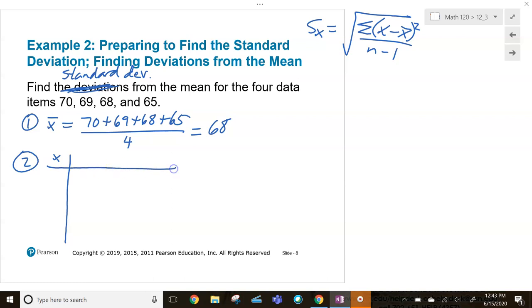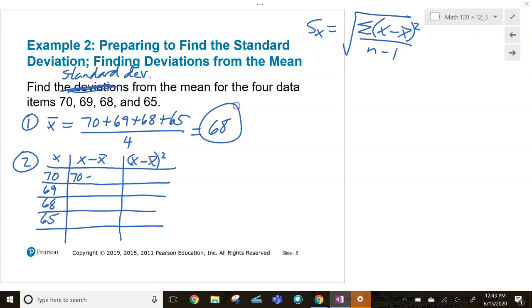Okay, let's go ahead and put in our data items. Then we'll find the difference between the data item and the mean, so the deviation. And then we'll square that number. Okay, so here's our data item, 70, 69, 68, 65. So we're going to take the 70 and we're going to subtract it from the mean, remember the mean is 68, so we get two. We'll take this 69 data item minus the mean, 68, we get one, and we'll take the 68 minus the 68, we'll get zero, there's no deviation there. Then we'll go 65 data item minus the mean 68, we get negative three.